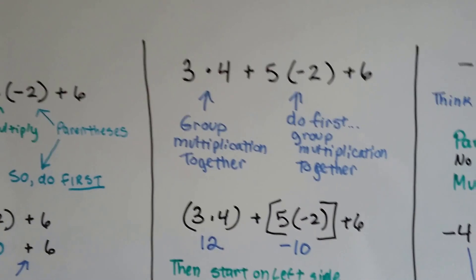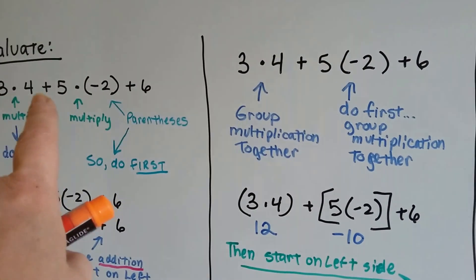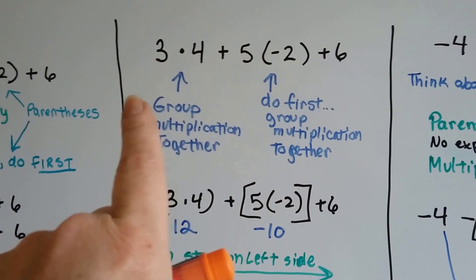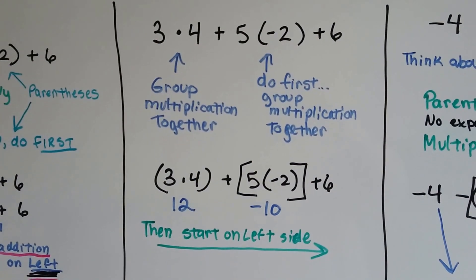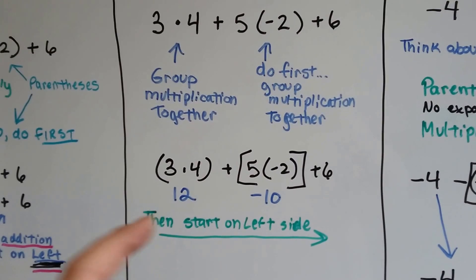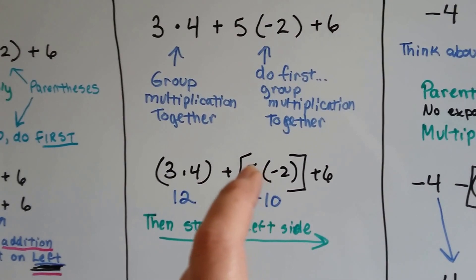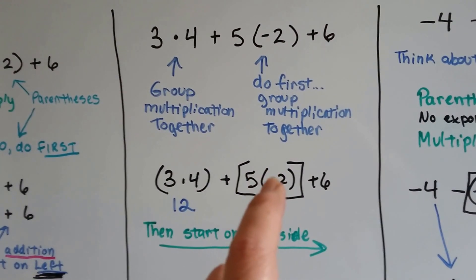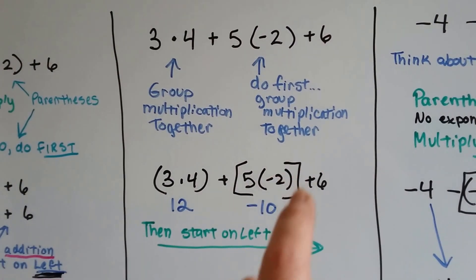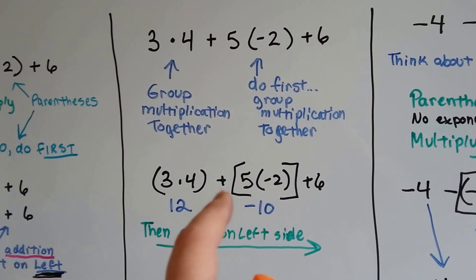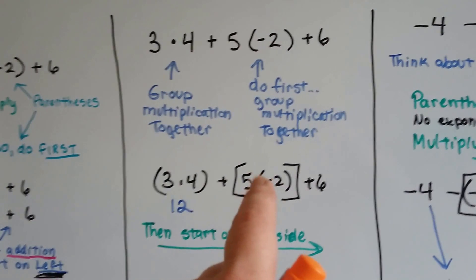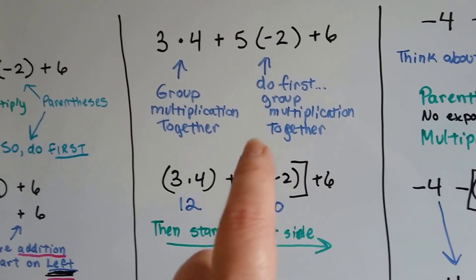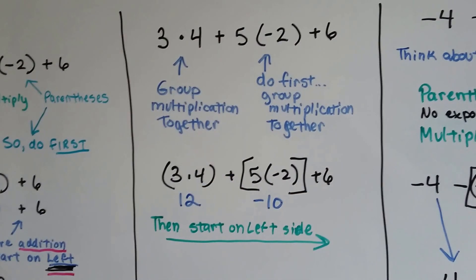Here's the same problem: 3 times 4 plus 5 times negative 2 plus 6. We group the multiplications together, and because they're in parentheses we do them first, starting on the left and moving across. You don't put parentheses inside parentheses — when something is already in parentheses, that's when you use a bracket. That's why boxy brackets come in: when you've already got parentheses inside and want to show another grouping.